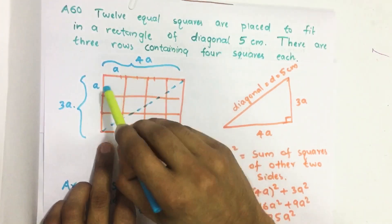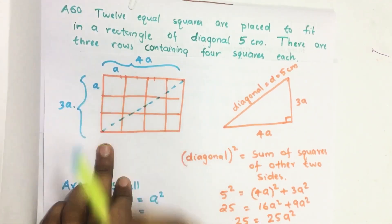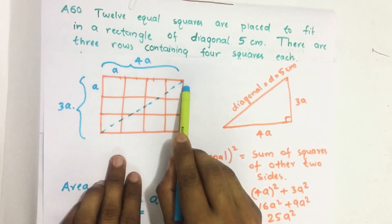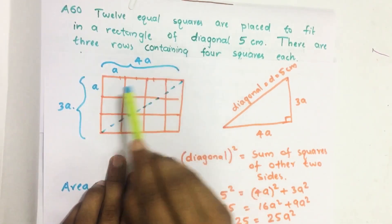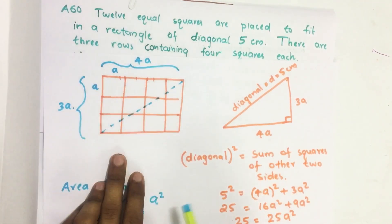So let us take one side of this small square equal to A. Then the width of this rectangle is 4A and the height equals 3A.